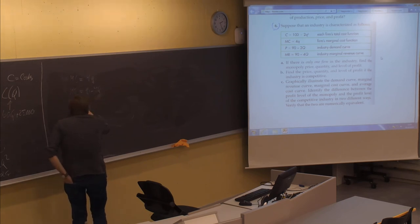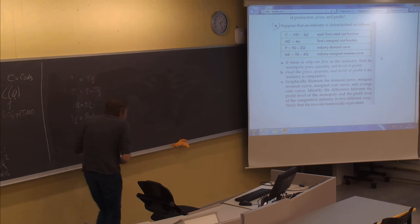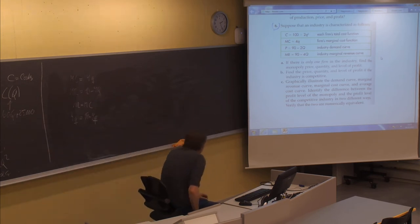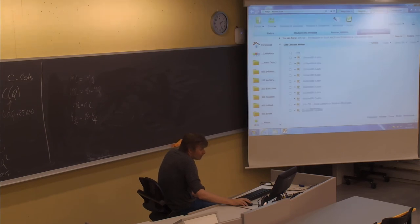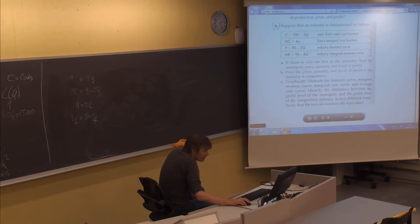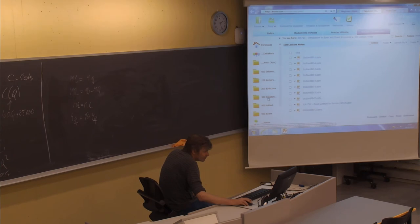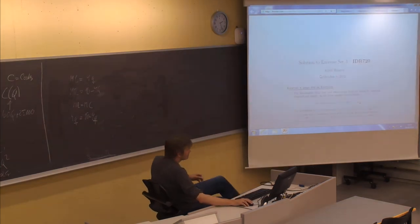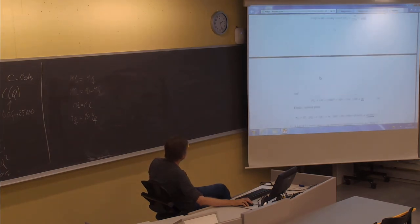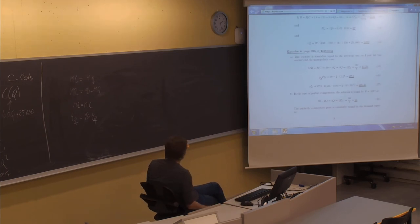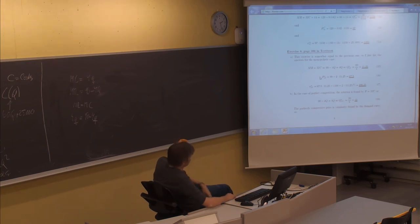Since we have both curves, we can equate them to find the solution, using the same Q to avoid confusion. Setting 90 minus 4Q equal to 4Q gives 8Q equals 90, so the monopoly quantity Q_m turns out to be 11.25.